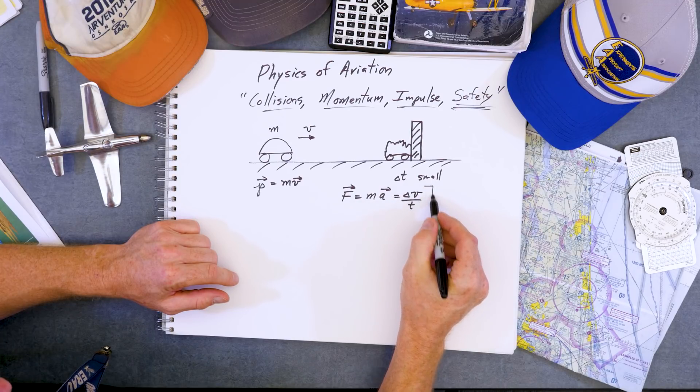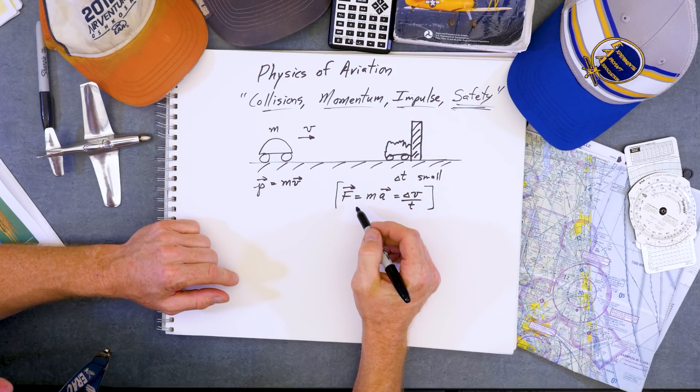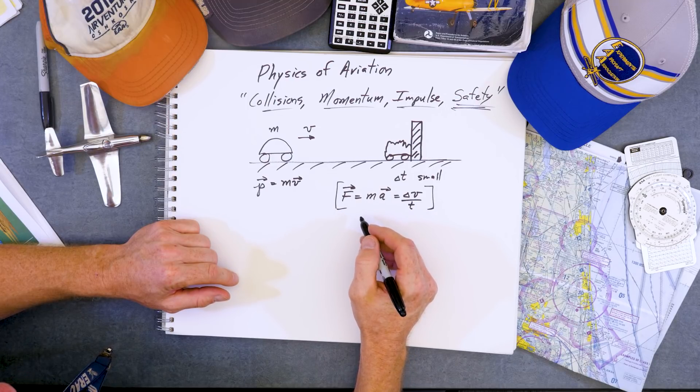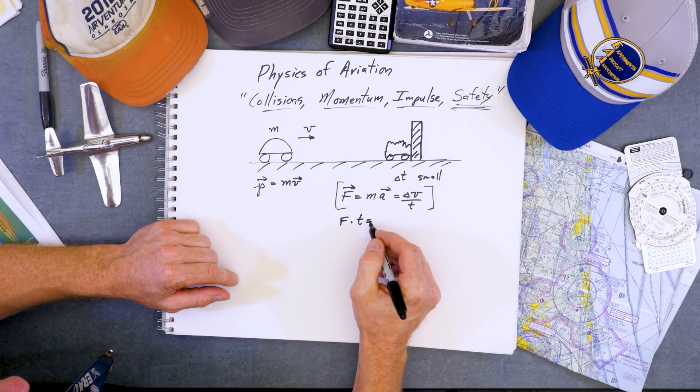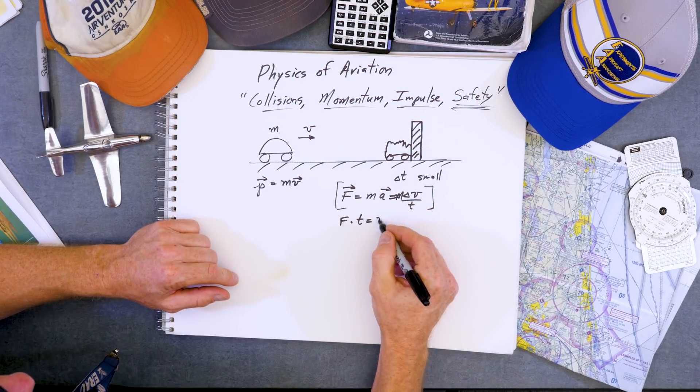So if you simply take the outsides of these equations and rearrange, we get force times delta time or force times time interval equals, oops, I forgot a mass here. M is M delta V.